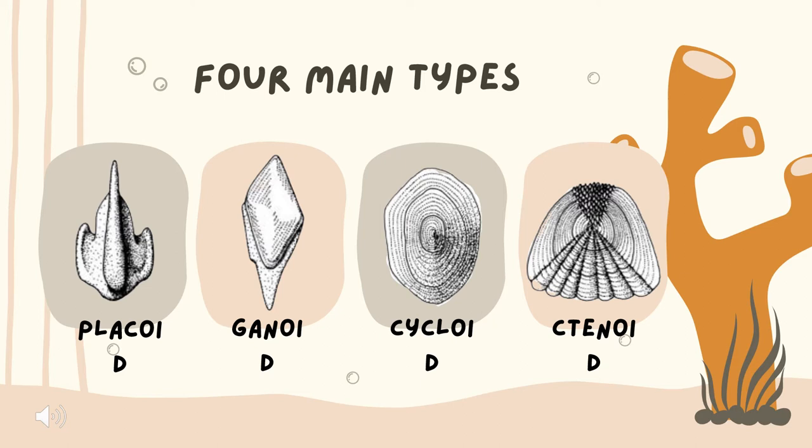Our last two types are cycloid and ctenoid scales, found in the majority of bony fishes. These scales usually overlap like shingles on a roof, which allows the fish to be more flexible and have better movement. These scales also grow rings like trees, which can be used for determining the age of the fish.